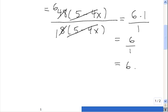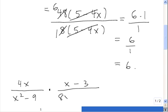Now let's work on a slightly trickier one. 4x divided by (x² - 9) times (x - 3) divided by (8x² + 12x).